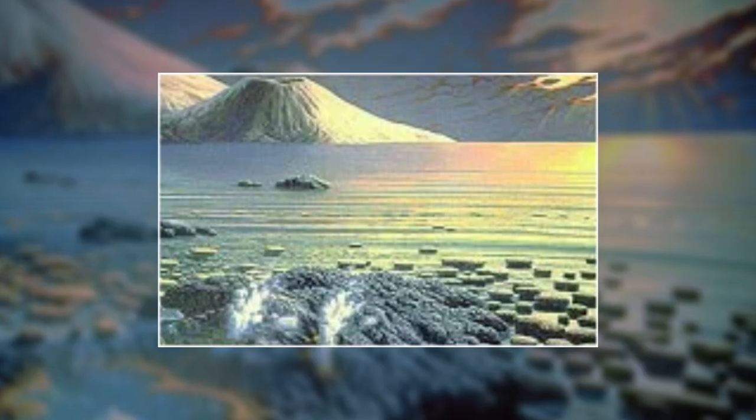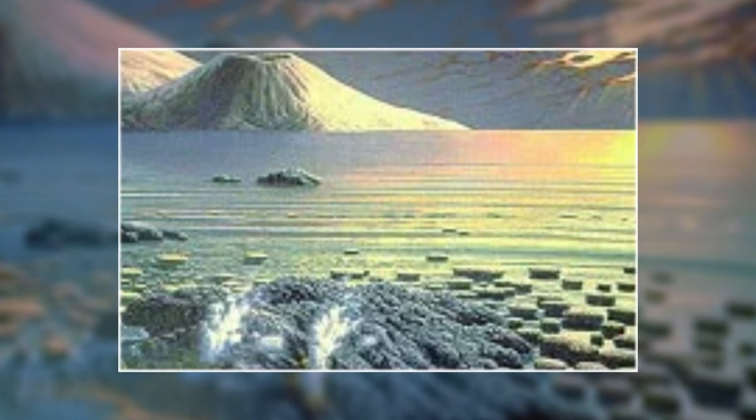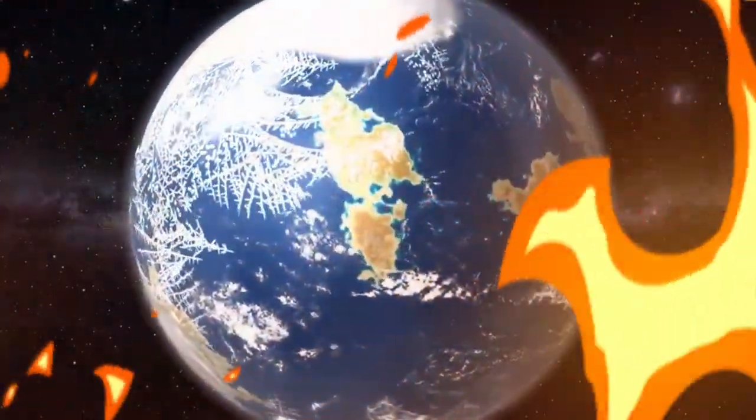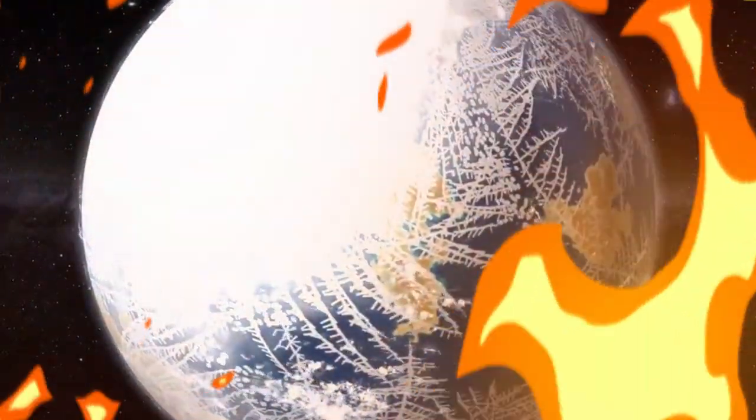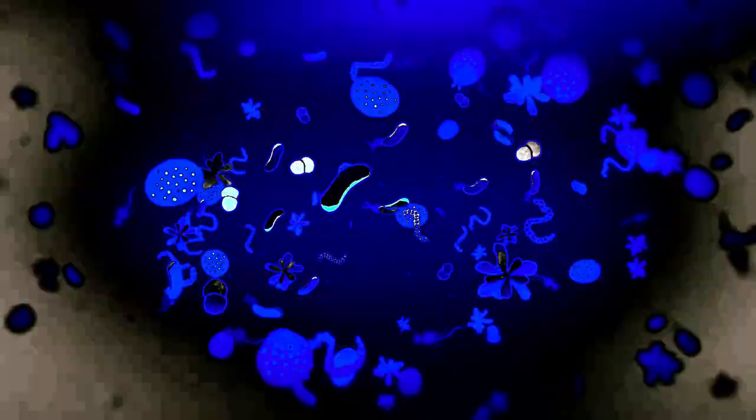Fast forward through the eons, and we find ourselves amid the Proterozoic Eon around 3.5 billion years ago, a pivotal chapter in Earth's evolutionary odyssey. During this epoch, the stage was set for the emergence of life, and the earliest actors in this cosmic drama were microbes. Microbes, simple, single-celled organisms, began to populate the ancient seas and oceans, setting the wheels of evolution into motion.